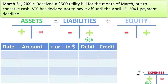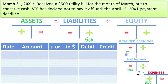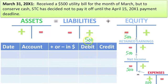This increase in expenses will decrease net income, which will decrease retained earnings, which will decrease equity. So equity is going down, liability is going up, and assets are not affected at all.